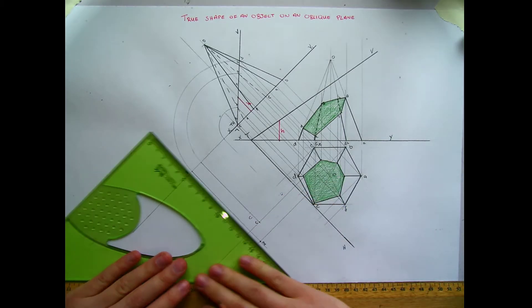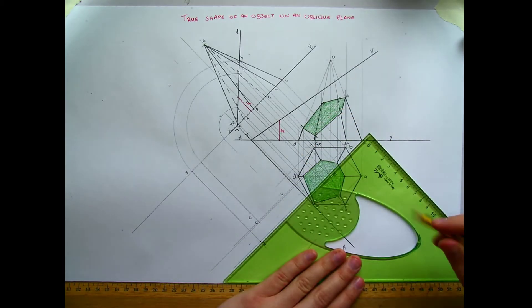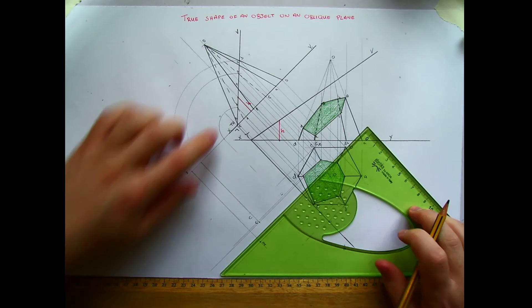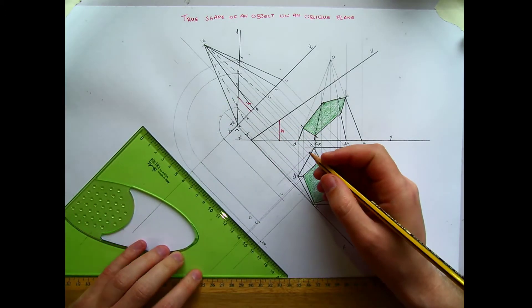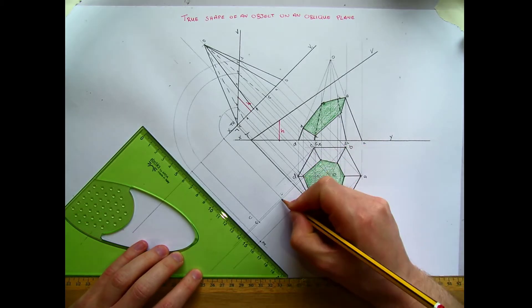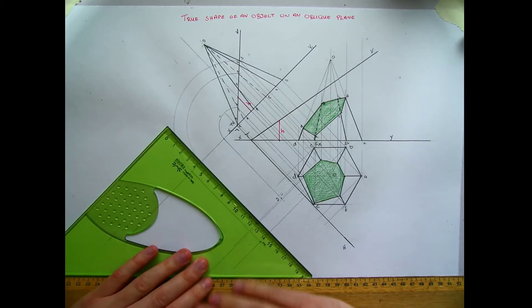I'm going to do the same thing for d, e and f. So that comes out along here somewhere. Point d is quite low and I've already swung around. So this point down here is d. So just be careful with your lines that you're not getting them mixed up.